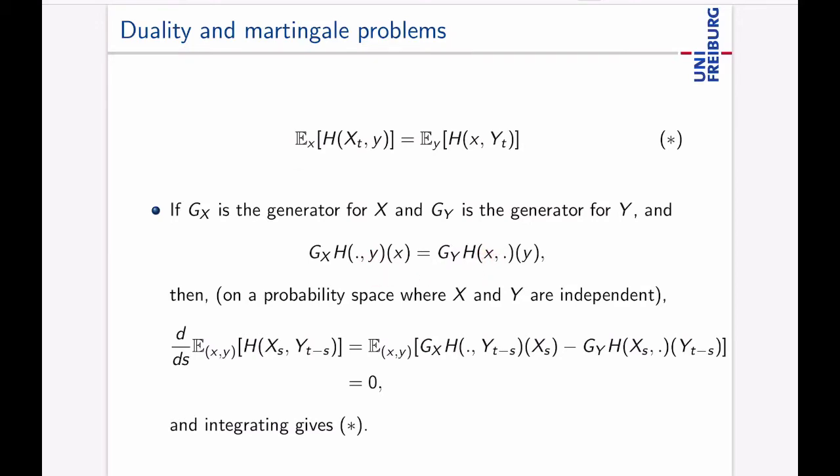So the generator of the function where Y is fixed and here the generator where X is fixed and that's just the same then in fact this equation here holds as you can easily see because when you compute the time derivative of this function here on a probability space where X and Y are independent, you see this is 0 which means that at s equals 0 you have the right hand side here and at s equals t here you have the left hand side here and since the ds derivative is 0 these here must match if just the generator equation here holds. So duality is not so hard to see when you look at the generator.